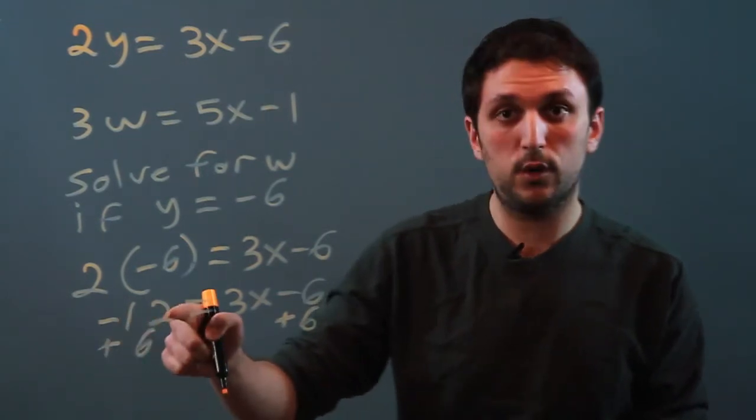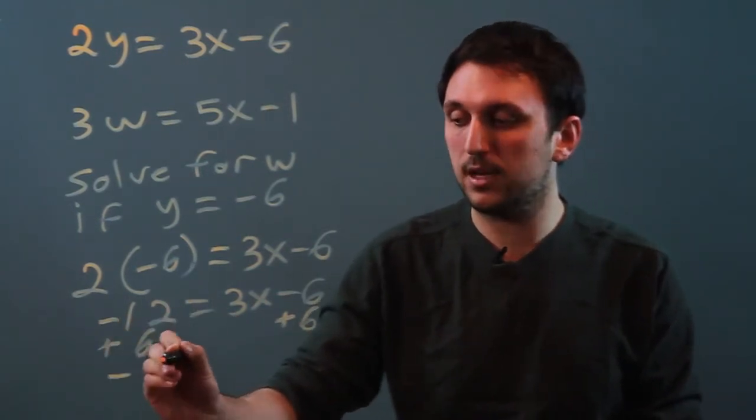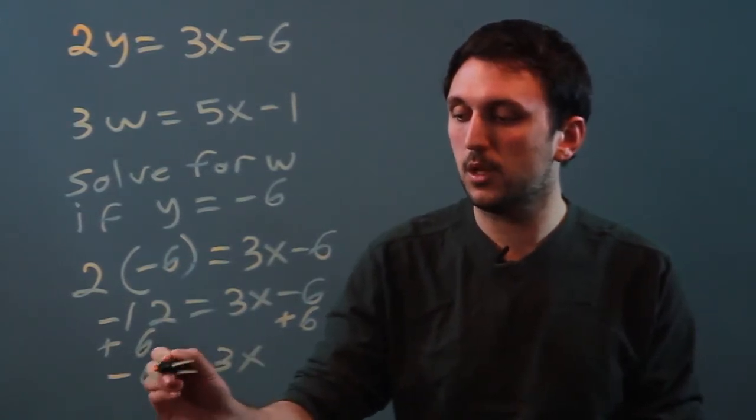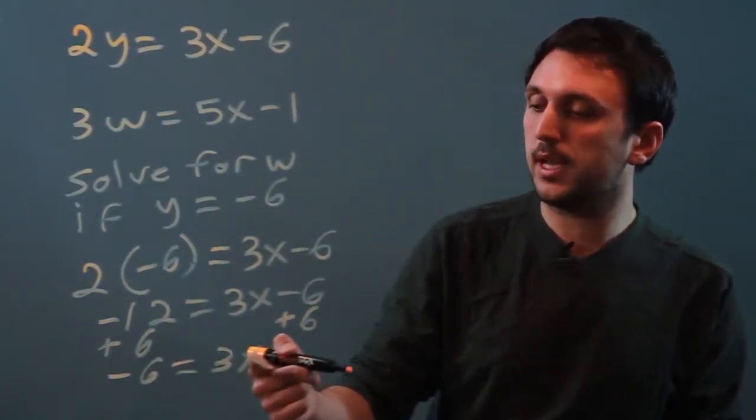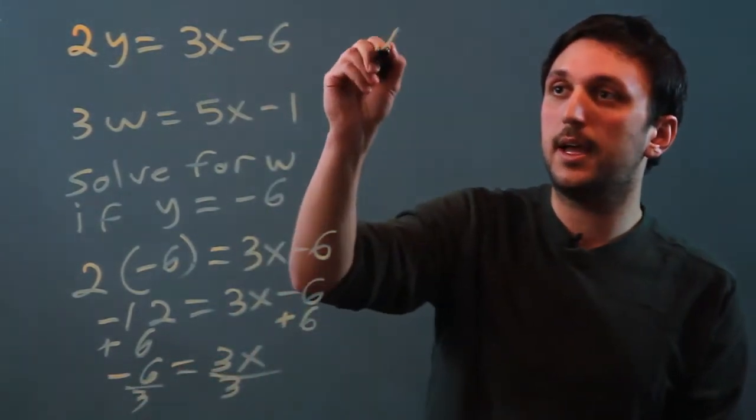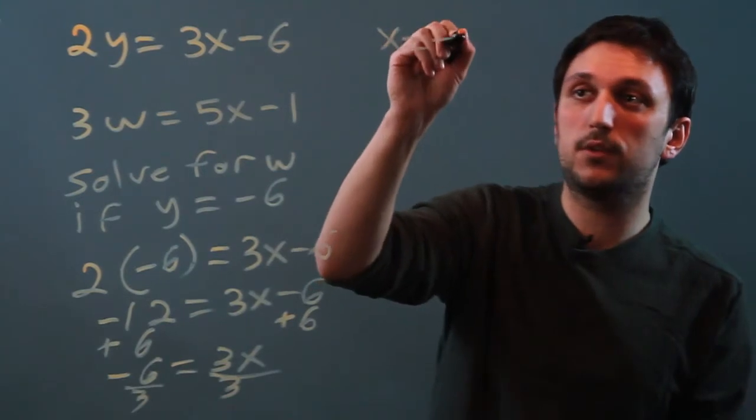And negative 12 plus 6 is going to be negative 6, which equals 3x. So negative 6 equals 3x, that means we're going to divide by 3 on each side, and x equals negative 2.